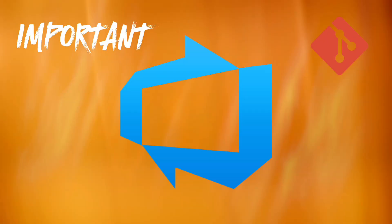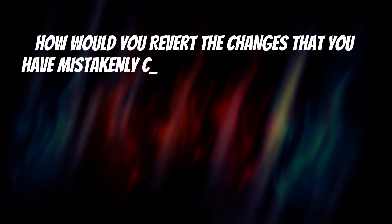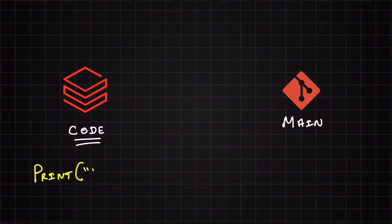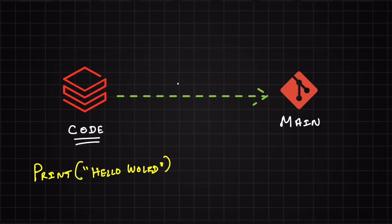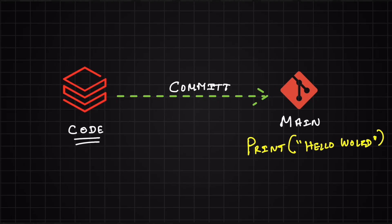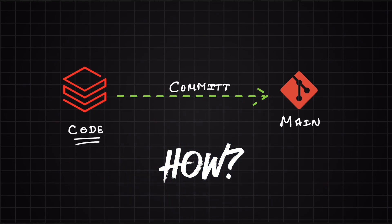The first question is: how do you revert the changes that you have mistakenly committed to the main branch? Say for example, you are using Azure Databricks to write some code and after writing the code you are committing the changes to your branch and finally pushing your changes to the main branch. Once this is done, say you have made some mistakes in your code — like a small typo in the print message. This can be any change from Azure Databricks notebooks, ADF pipelines, Synapse pipelines, etc. When you've pushed wrong changes to the main branch and you want to revert them, how would you do it?